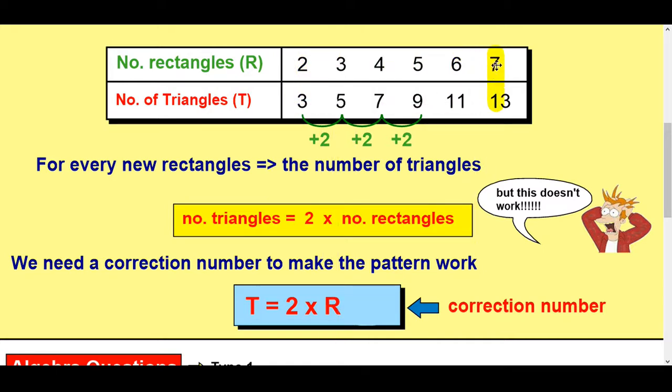If I do seven times two, I get 14. How do I get back to 13? Well, you would take away one. Well, let's check it and see if it works in this one.